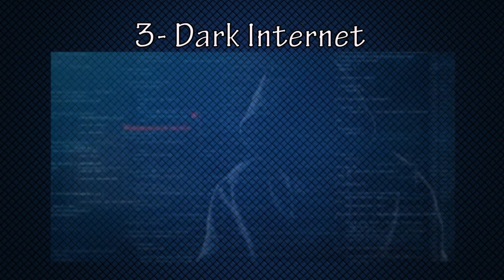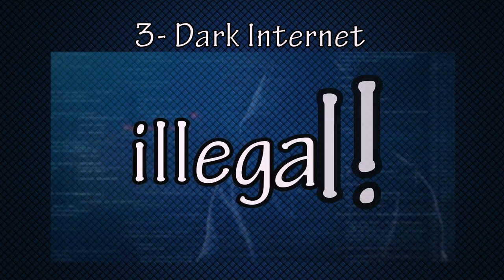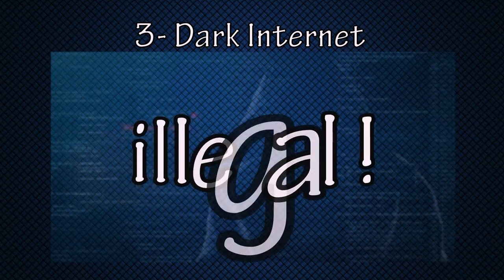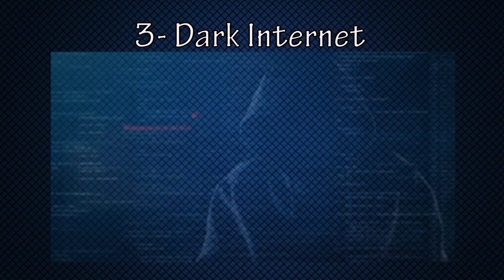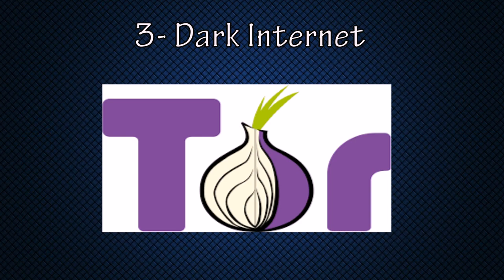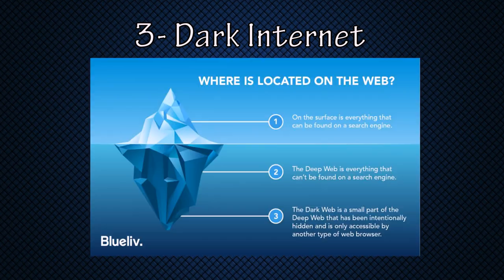Now the third and last type is dark web. Before explaining anything about dark web, I want to tell you that this is completely illegal and I am warning you not to use it, as it can be very harmful to you. This internet cannot be used by normal browsers — you need special browsers like the Onion browser, or you can say Tor browser. If I compare an ice glacier with this internet concept, the upper part of the glacier contains the surface internet and deep web, and the huge lower part contains the dark web. Every single thing you can imagine can be done on the dark web.